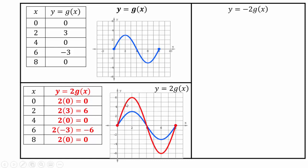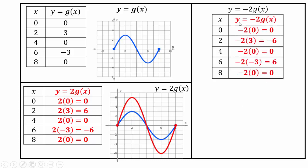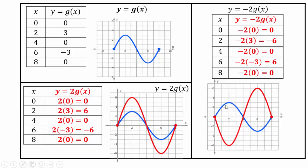For negative 2 times g(x): again make the chart and multiply by negative 2. Anything that was positive becomes negative and negative becomes positive — it is a reflection across the x-axis combined with a vertical stretch by 2.